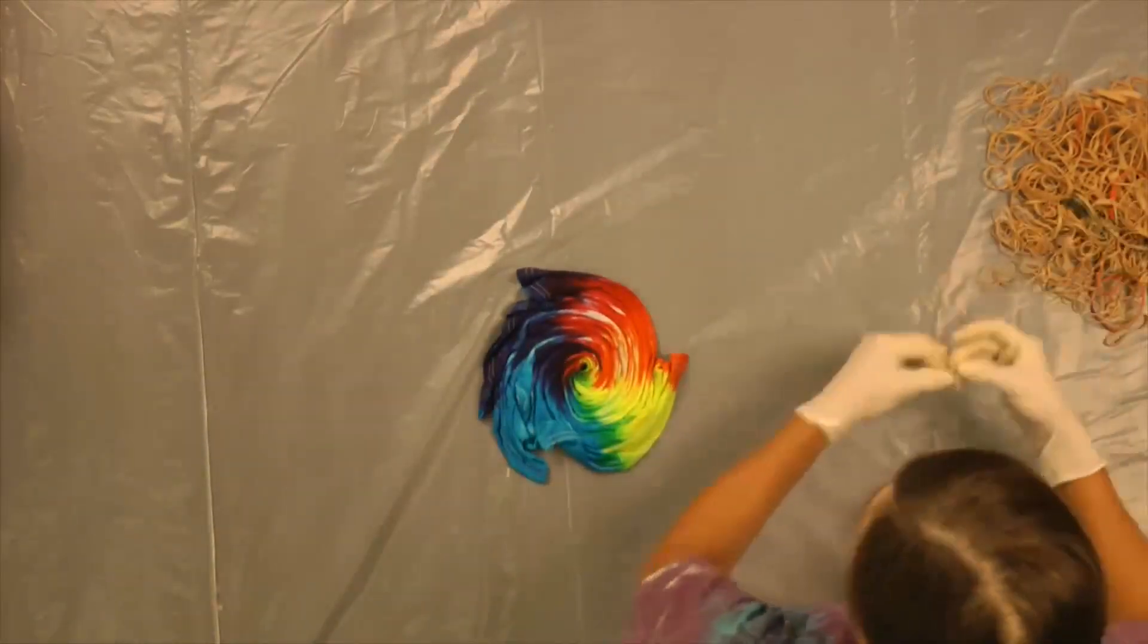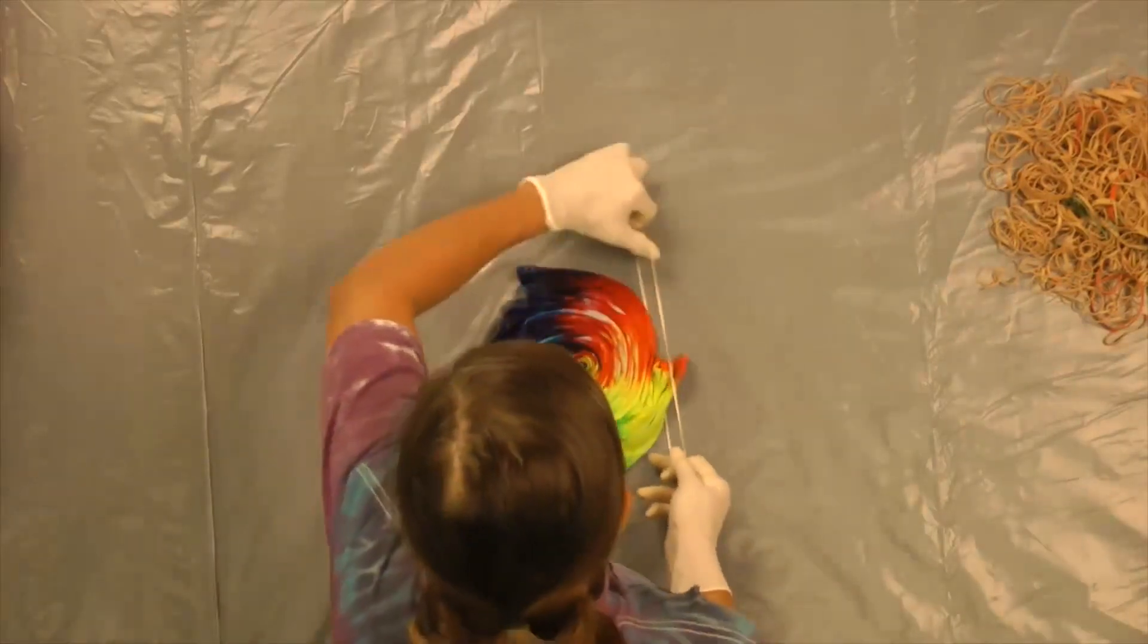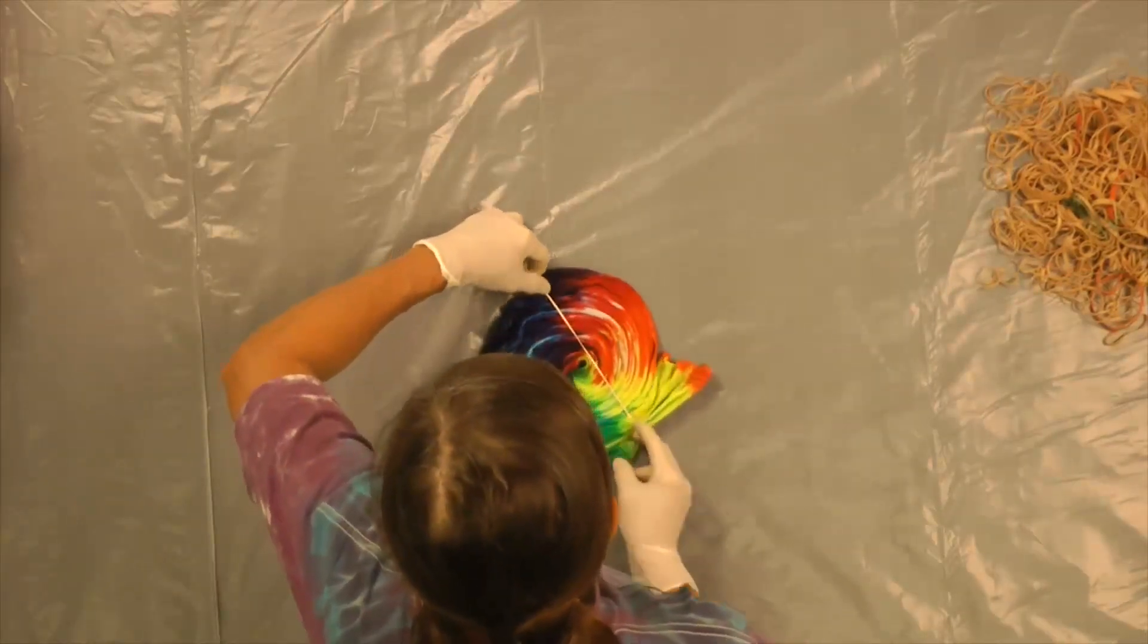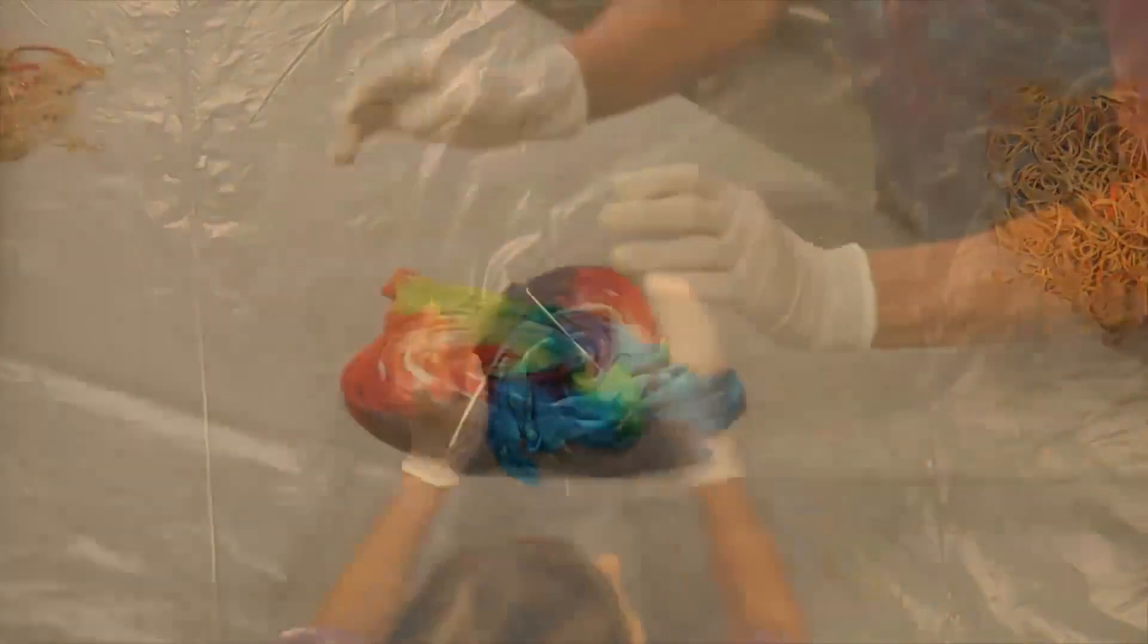Now, the trick to putting the rubber bands on is to leave the shirt flat on the table and slide your rubber bands on. That's why you need a slippery surface.